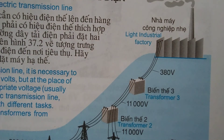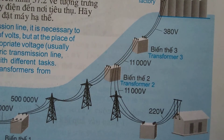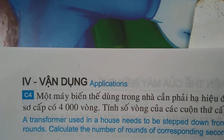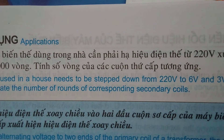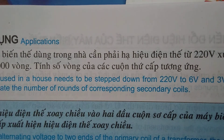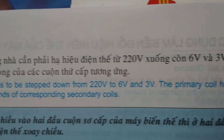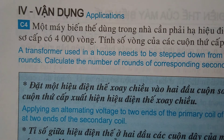Applications: A transformer used in a house needs to step down from 220 volts to 6 volts and 3 volts. The primary coil has 4,000 turns. Calculate the number of turns of the corresponding secondary coils.